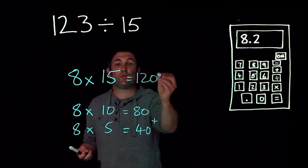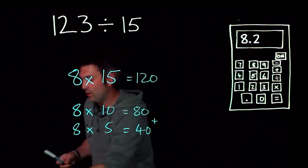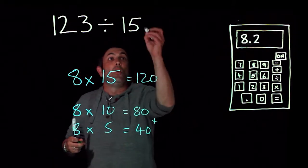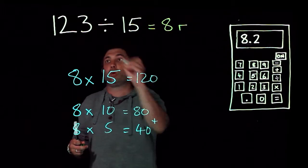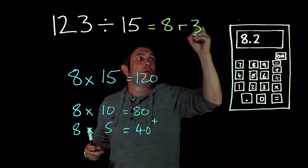So 8 lots of 15 is 120, therefore we need 8 and then the remainder is - well, 120 up to 123 is 3.